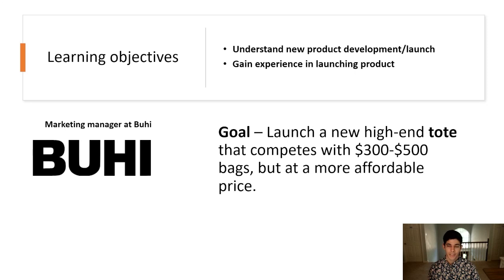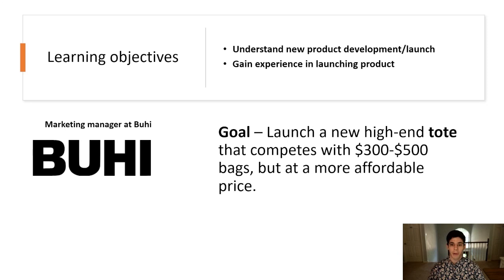The Stuken Simulation puts all of this in a simple interface that gives you the ability to use the information without the overcomplication of several different company platforms. Your role in the simulation is to launch a new product — specifically a new tote that competes with $300 to $500 bags but at a more affordable price. This aligns with value-added pricing, which is one of the strategies discussed in chapter 10.